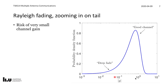Zooming into the tail using a logarithmic horizontal axis reveals that while many realizations are near 1, there is a substantial probability of the channel being very close to 0. With probability 0.2, the channel is down at 0.1, and with a few percent probability it is down at 0.01. In those cases we say the channel is in deep fade, meaning it is very close to zero.